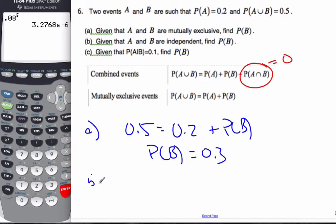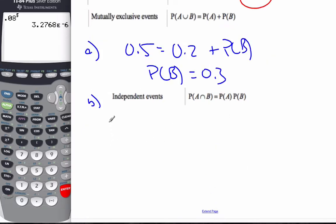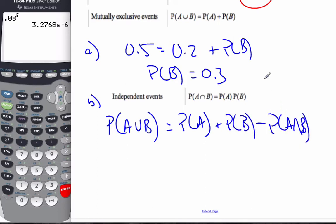Part B says, given A and B are independent, find P(B). Well, if these two events are independent, I know this about independence. So using my general formula that says P(A union B) is P(A) plus P(B) minus the intersection of the two.